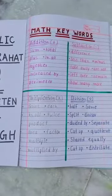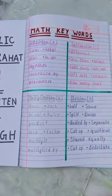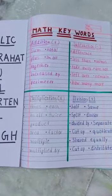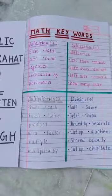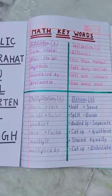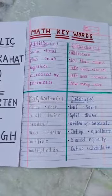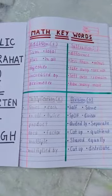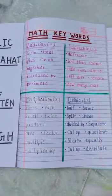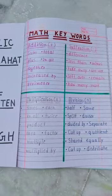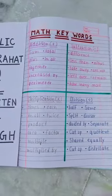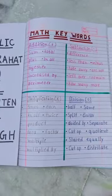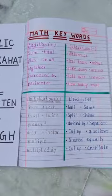Fourth and last, division. The other words used for division are: half, same, split, divisor, divided by, separate, cut up, quotient, shared equally, distribute.